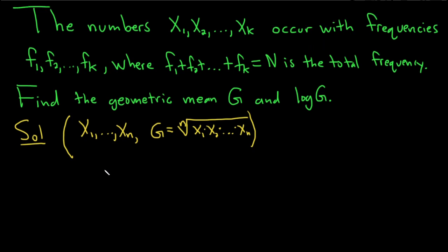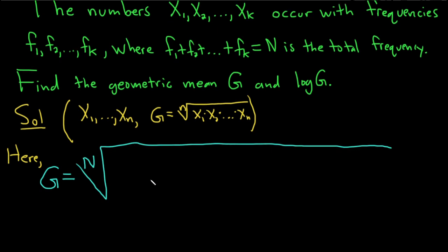So here, in this particular problem, G is going to be the Nth root. Now we basically have to multiply all the numbers. However, the numbers appear a certain number of times. For example, x1 appears f1 times.